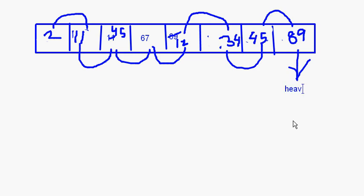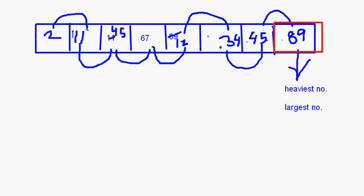Now what you are seeing is that 89 — the heaviest element, the largest number — has come at the end. Next time when you go through the loop, we will not take into account this 89, since it is now the heaviest element which has come at the end.